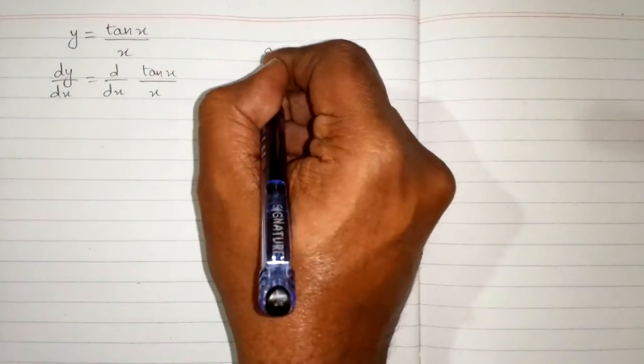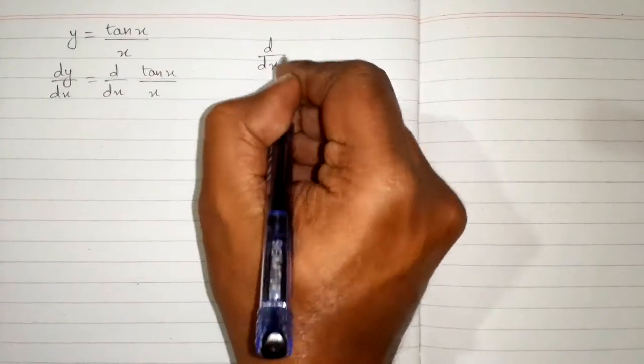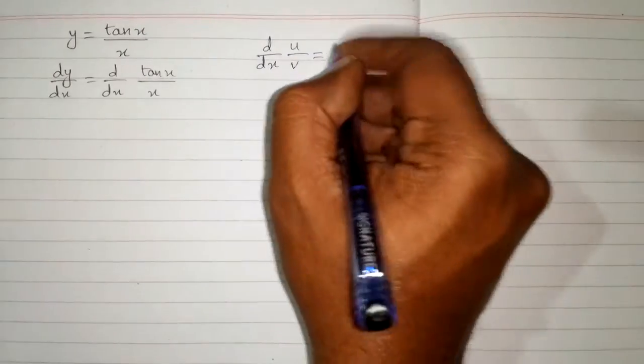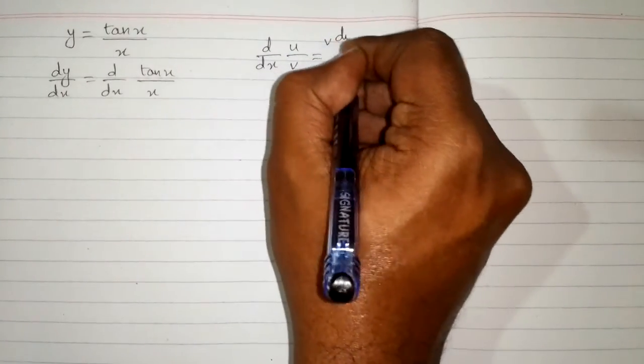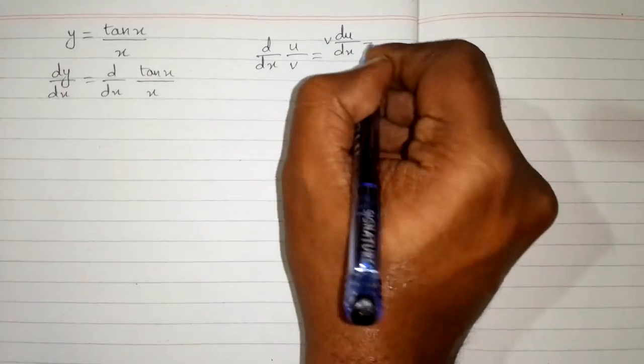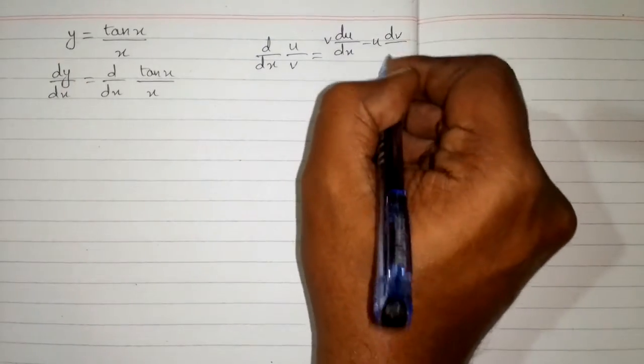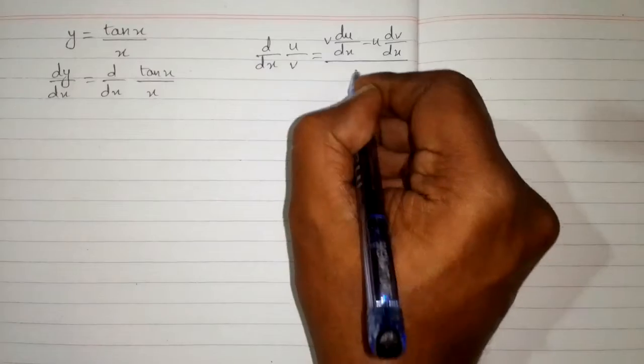So now we will use the quotient rule of differentiation which is d by dx of u upon v is equal to v times derivative of u minus u times derivative of v upon v square.